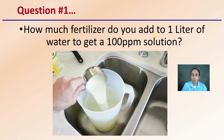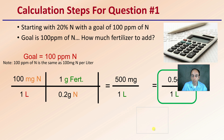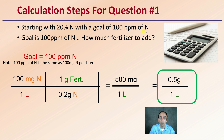First question: how much fertilizer do you add to one liter of water so you get a 100 parts per million solution? Starting with that 20% nitrogen and the goal of 100 parts per million — note that 100 parts per million is the same as 100 milligrams per liter, so we're doing a metric conversion. We want 100 milligrams of nitrogen per liter. We have 0.2 grams of nitrogen per one gram of fertilizer, since 20% of one gram is 0.2 grams. We multiply across the top, divide by the bottom, and we get 500 milligrams per liter.